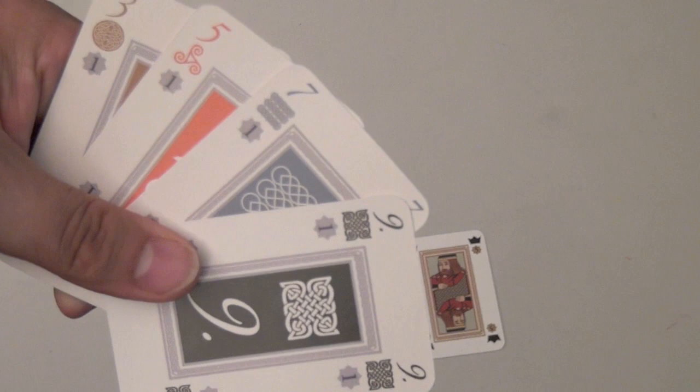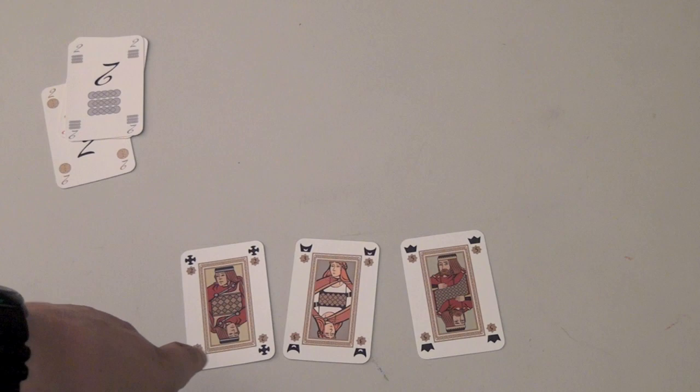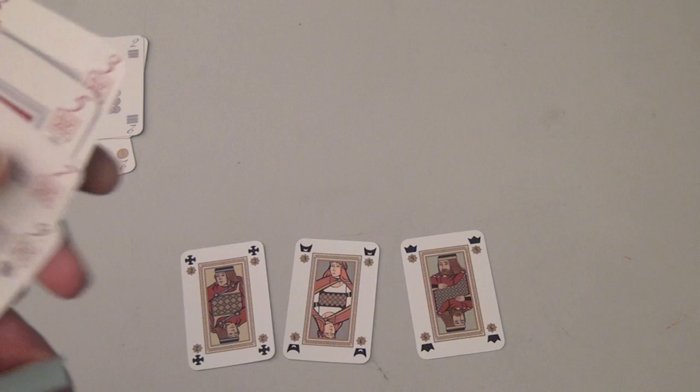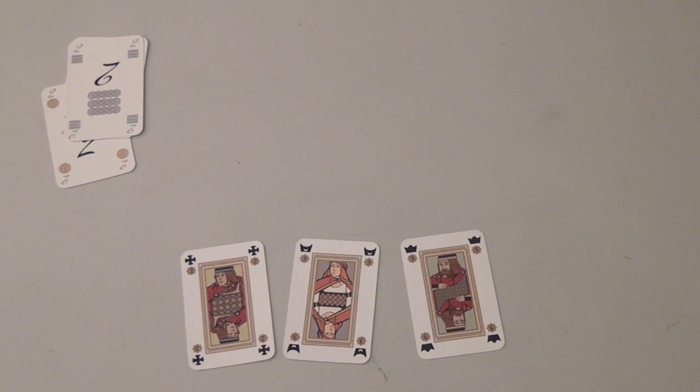And then after that, there's bombs that are combinations of like the jack and queen, the jack and the king, and the queen and the king, or all three of them is the second highest bomb. The highest bomb possible is a three, five, seven, nine, all of the same suit. Well, there you go. You play a bomb, you automatically win the trick unless someone else plays a higher bomb than you.